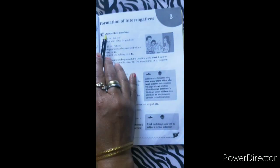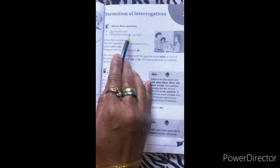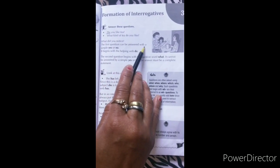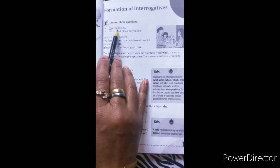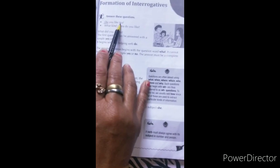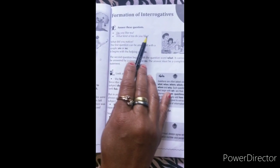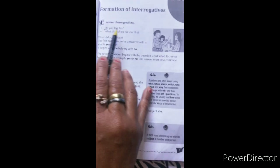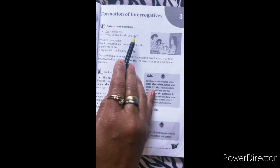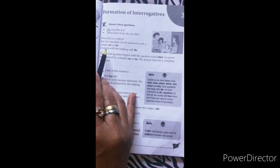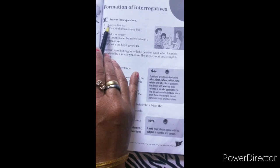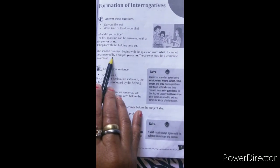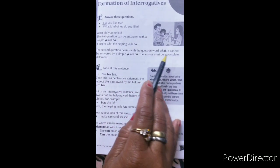Now let's start. Answer these questions: 'Do you like tea?' and 'What kind of tea do you like?' What did you notice? Here we can see two types of questions. The first question — 'Do you like tea?' — can be answered with a simple yes or no. Pehla jo question hai, iska answer hum simple yes or no mein de sakte hain. It begins with the helping verb 'do'. The second question begins with the question word 'what' and cannot be answered by a simple yes or no — the answer must be a complete statement.